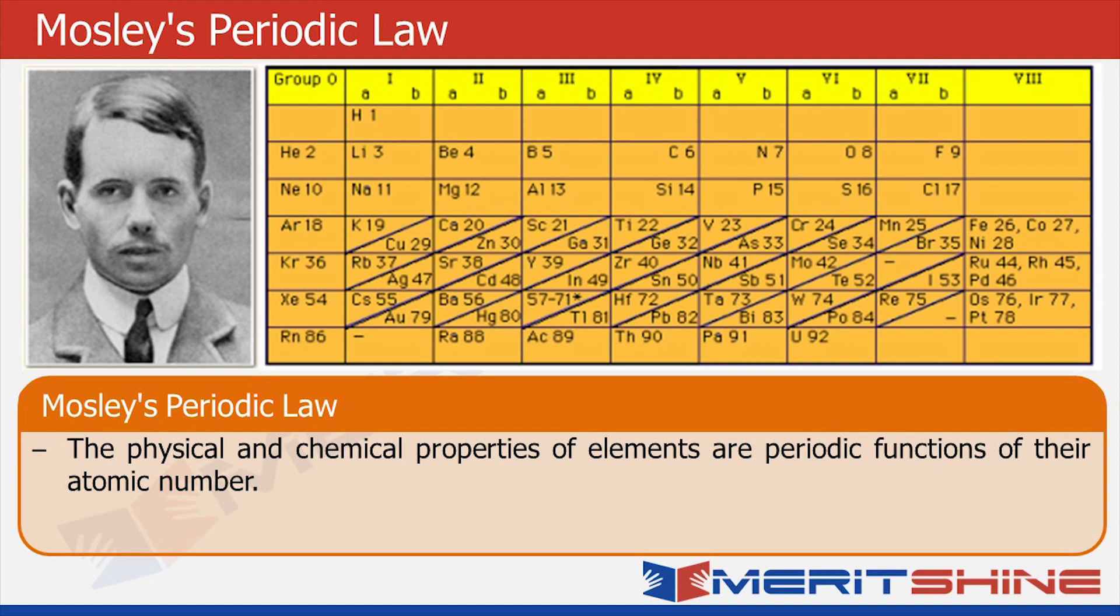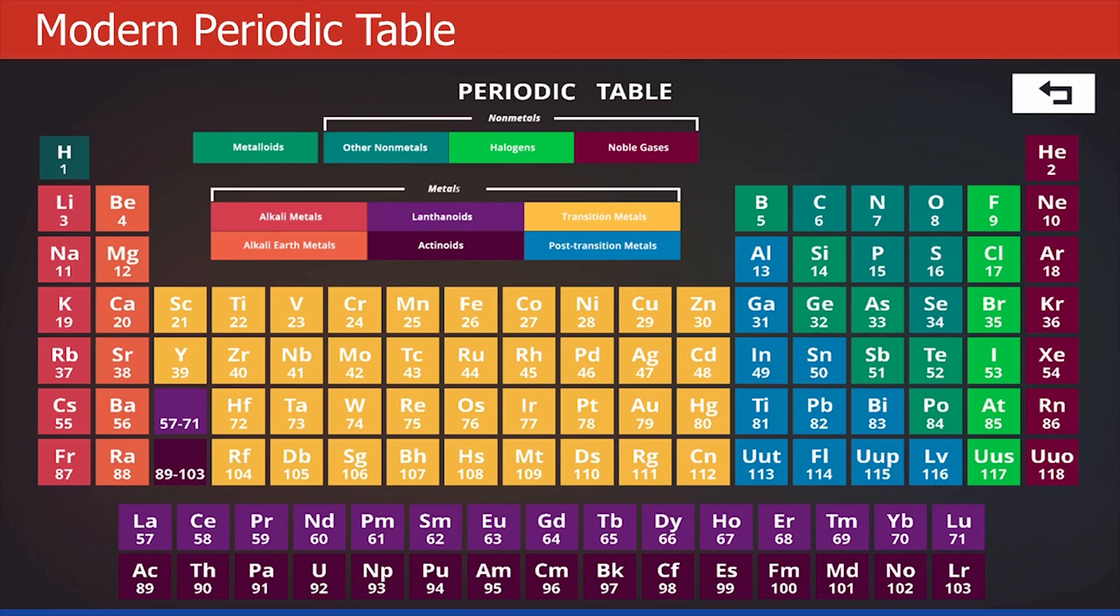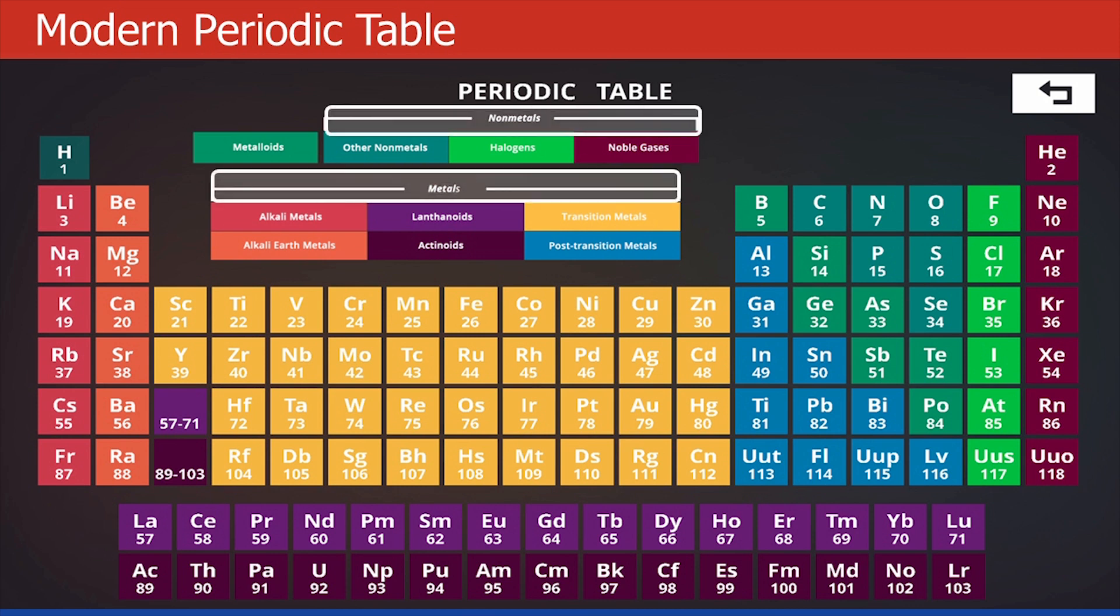It might seem very obvious to us today, but it was really an important discovery. Now that we have understood the history of periodic table, it's time we understand its use in inorganic chemistry. Look at this color-coded periodic table. First of all, it is broadly classified as non-metals and metals.